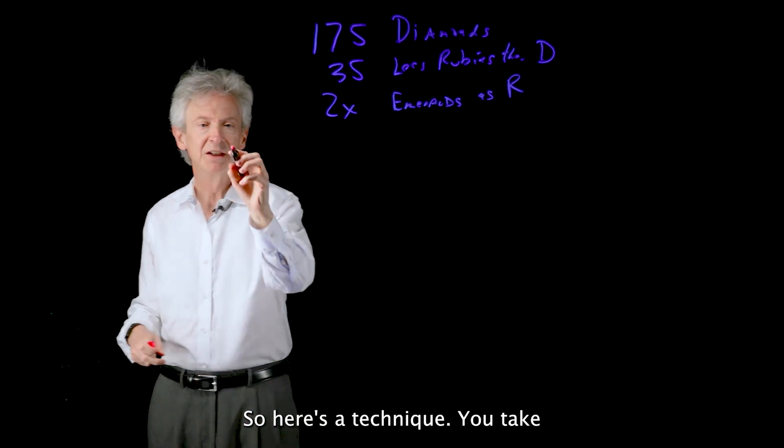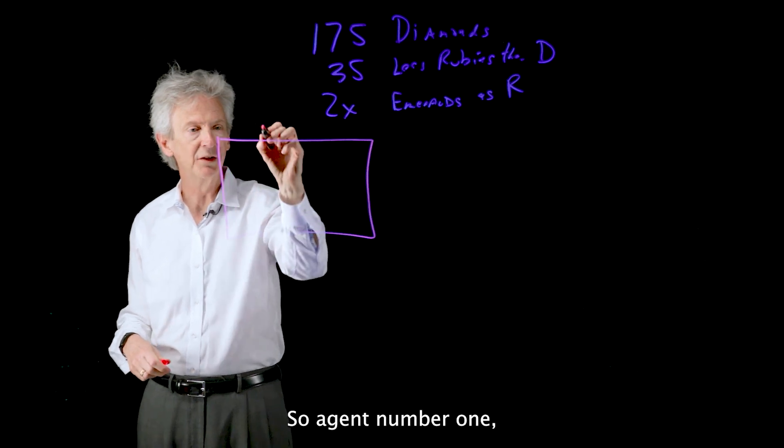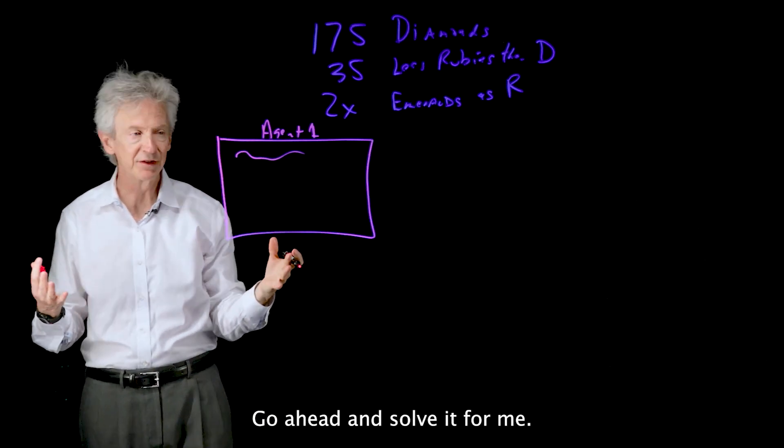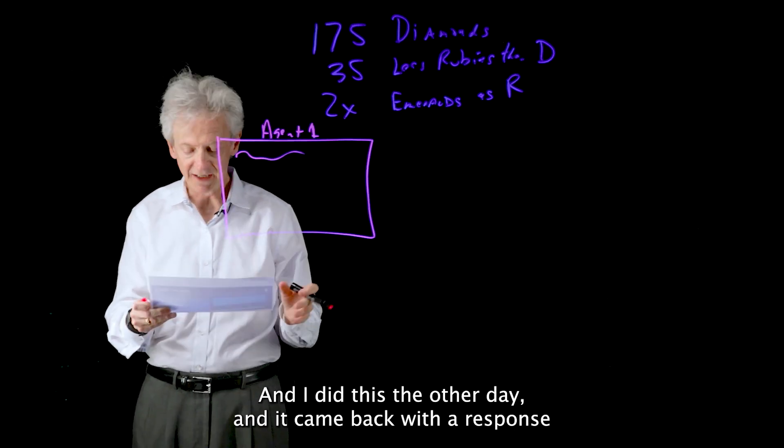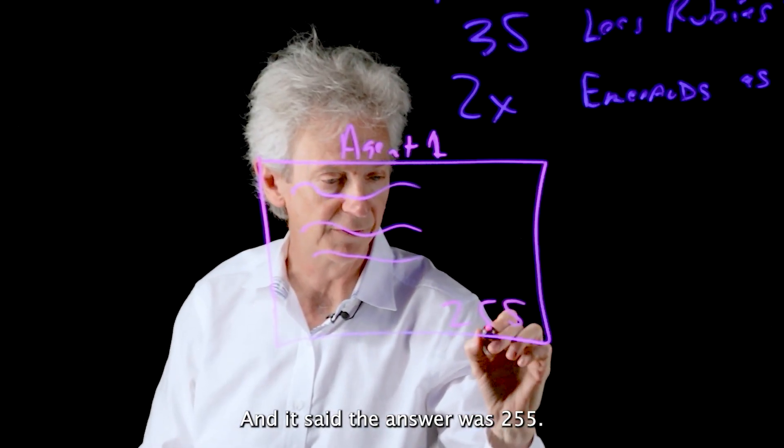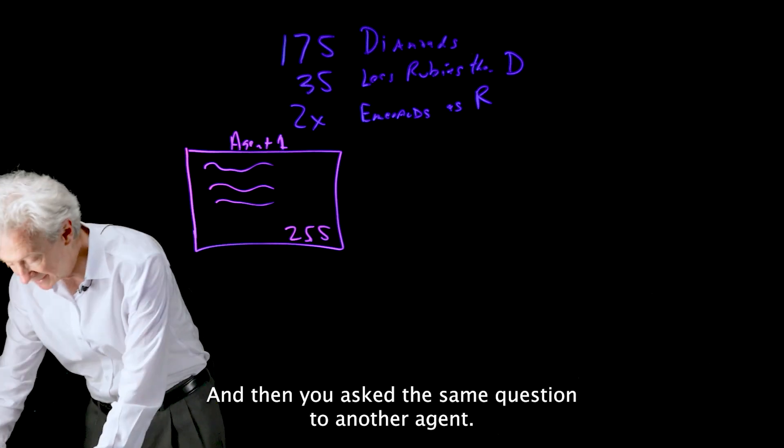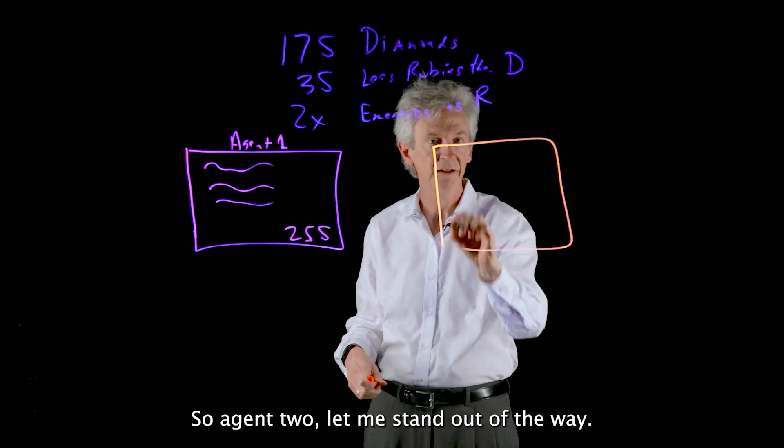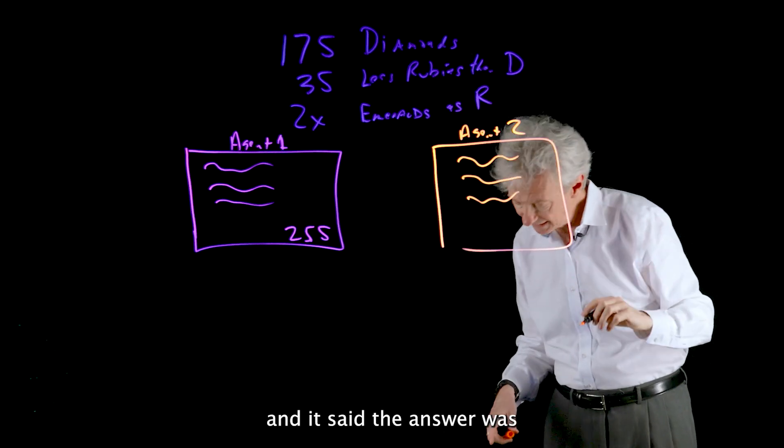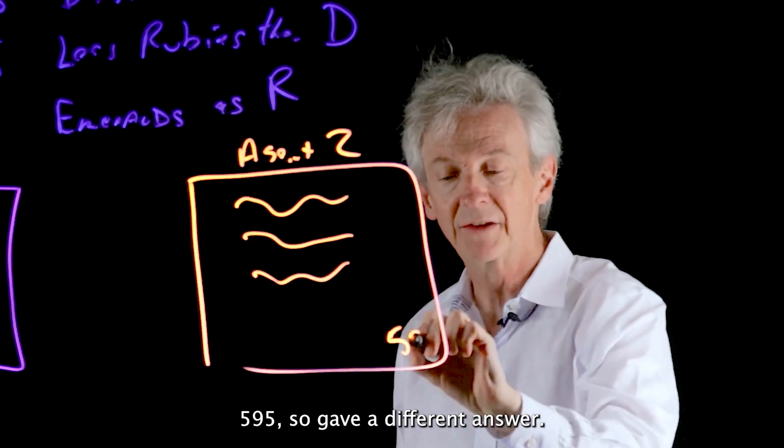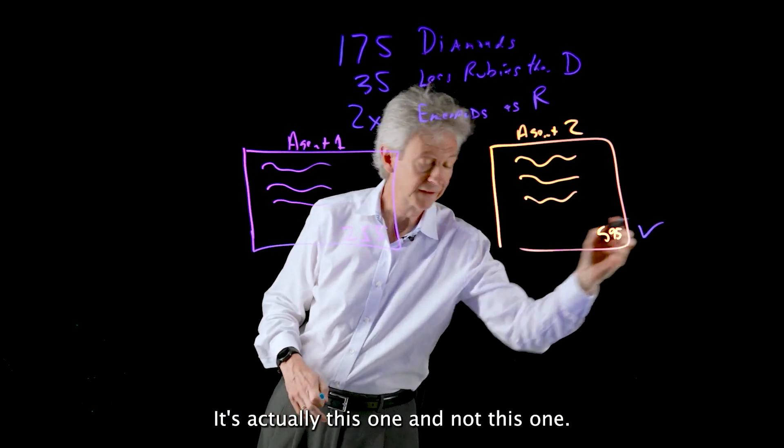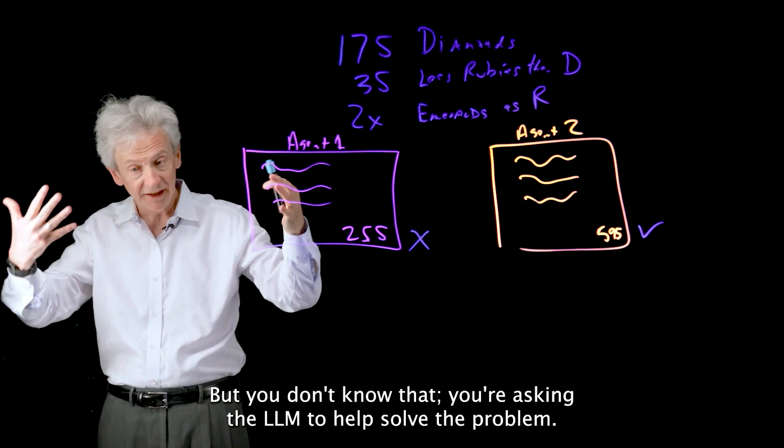So let's say that was the math problem that you wanted to solve with large language models. So here's a technique. You take model number one, agent number one, and you ask it this math problem. And I did this the other day. And it came back with a response and gave a big explanation of how it did the math. And it said the answer was 255. And then you asked the same question to another agent. Agent two also gave an explanation of its math and it said the answer was 595. So it gave a different answer. Now it turns out that one of these is right. It's actually this one, and not this one.